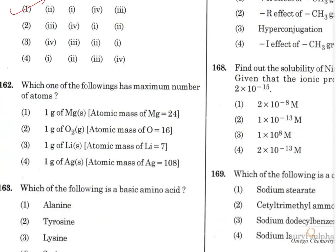Question 170: Which of the following has the maximum number of atoms? The number of atoms is proportional to moles = mass/atomic mass. Since all four options give 1 gram of an element, the numerator is constant, and a lower atomic mass gives more moles and hence more atoms. Among the options, lithium has the lowest atomic mass, so it is the correct answer.